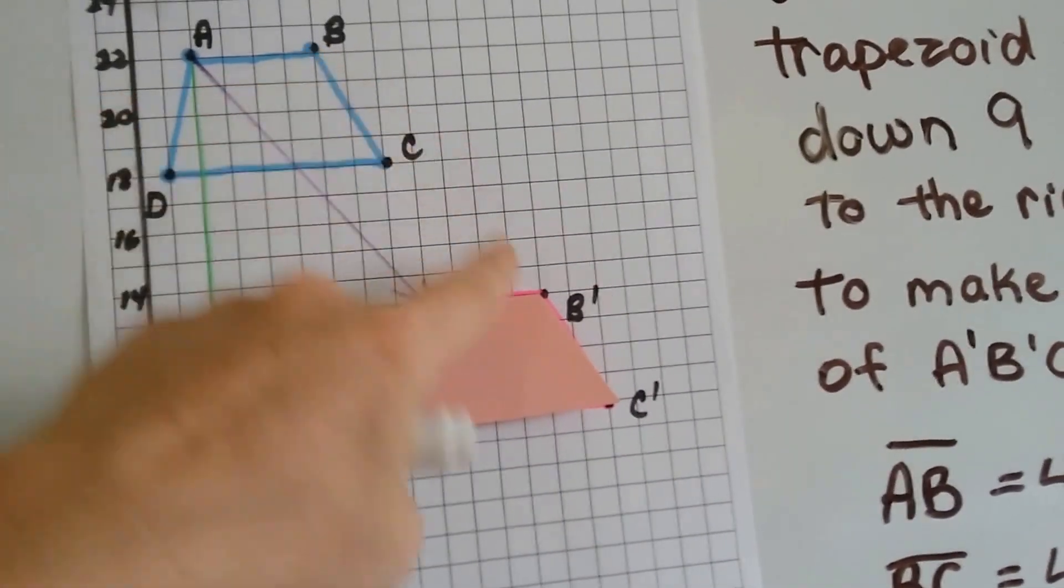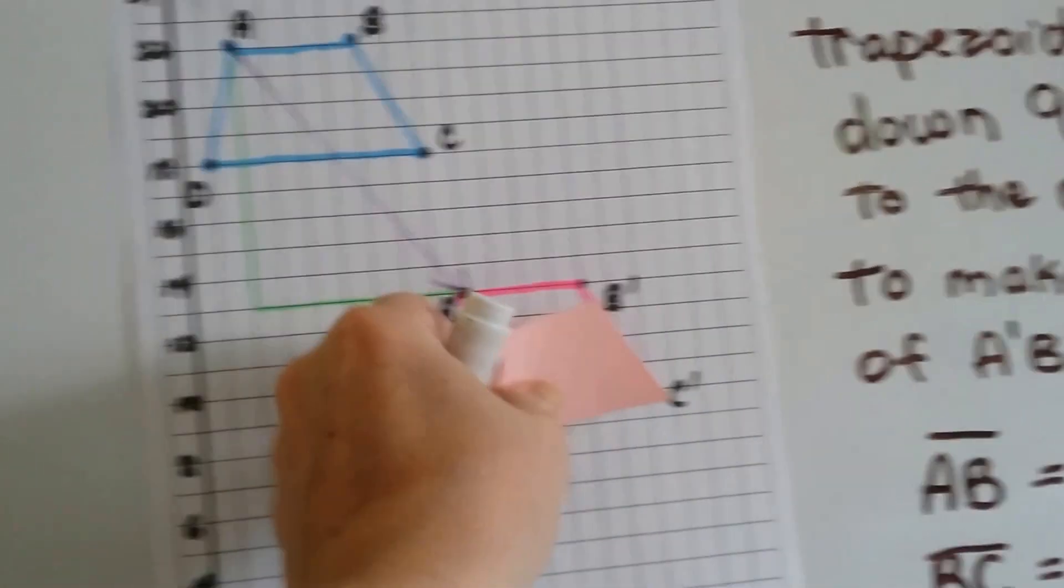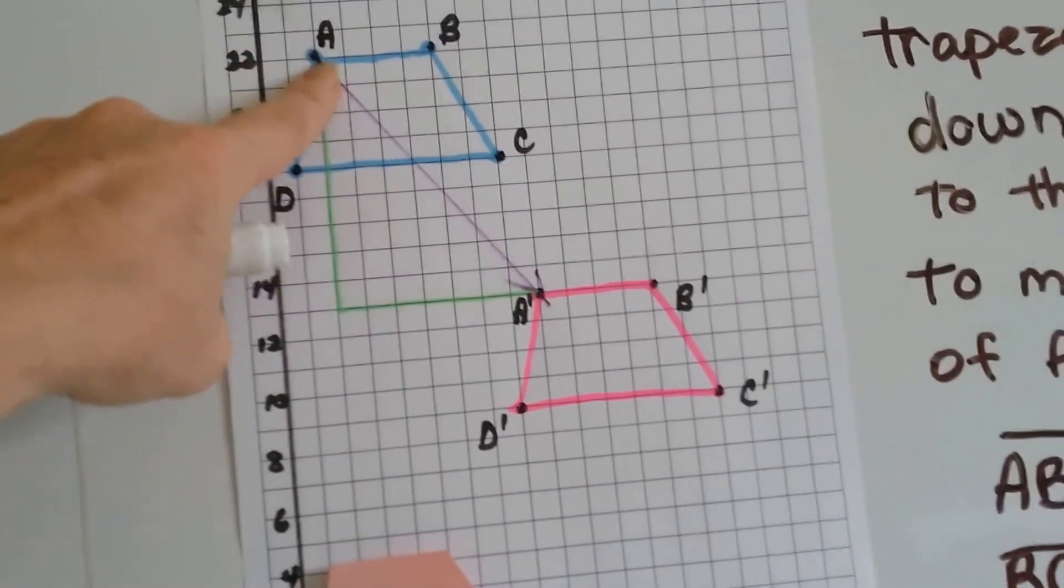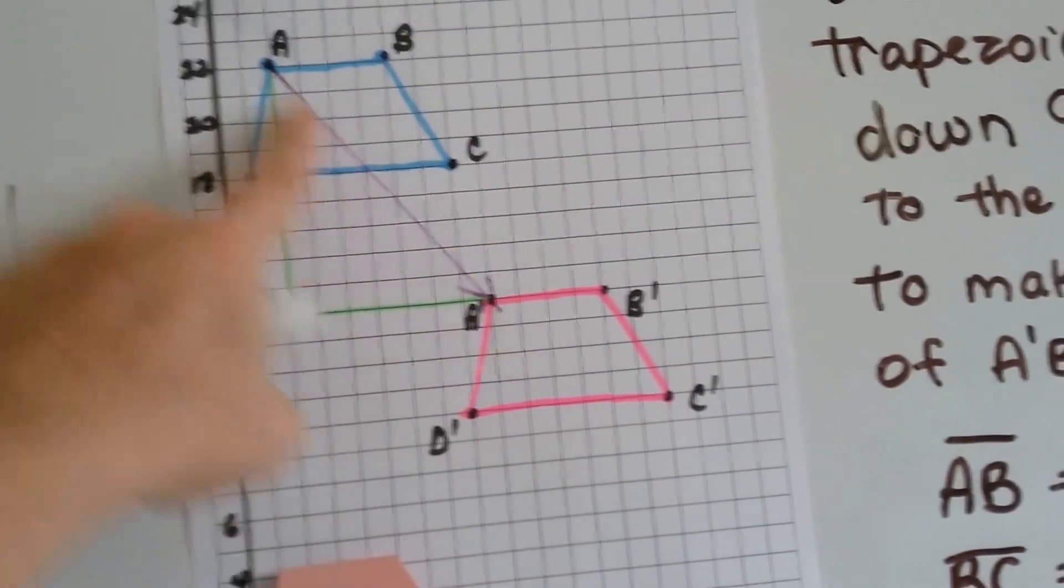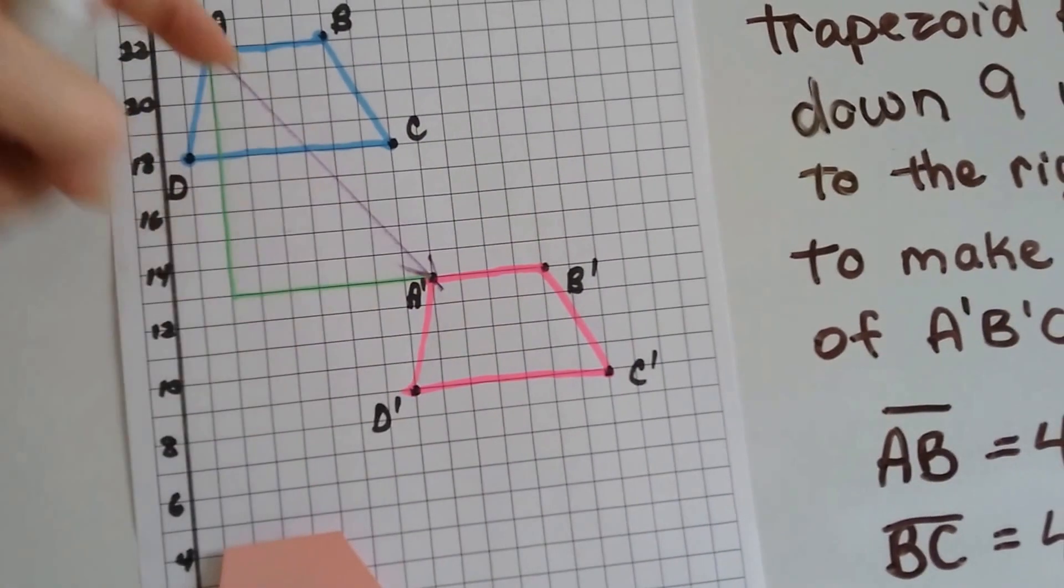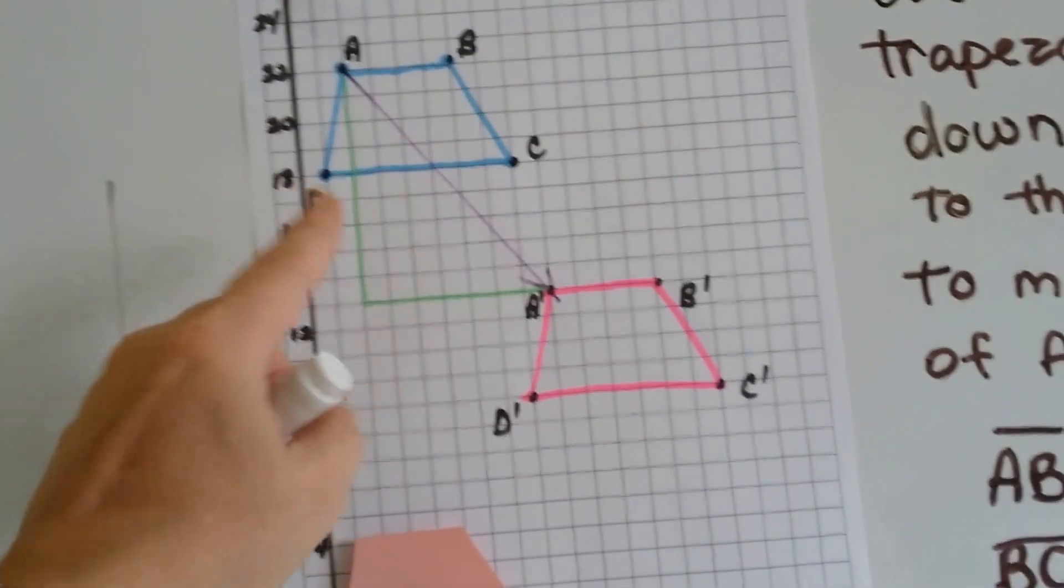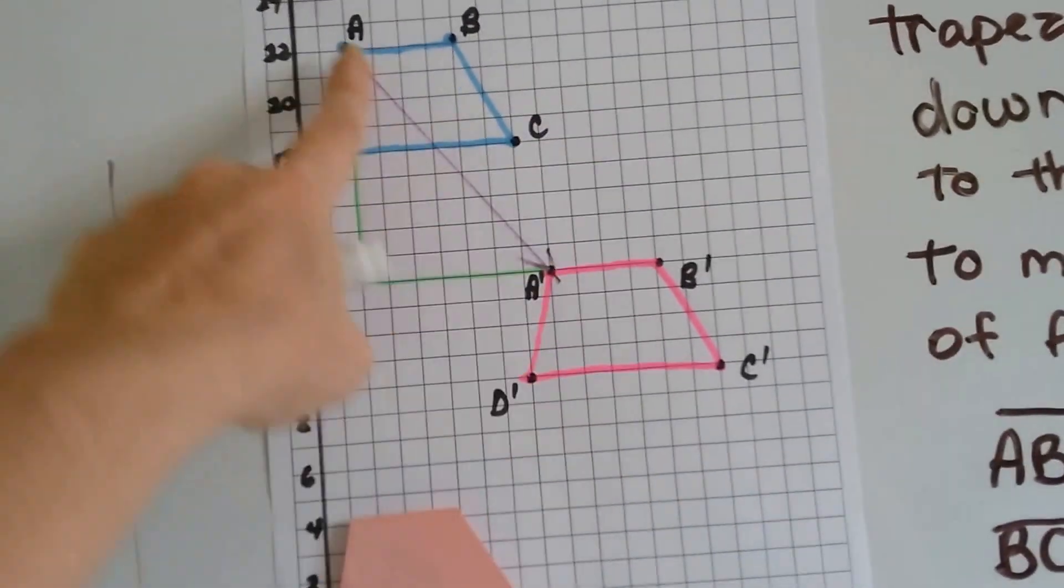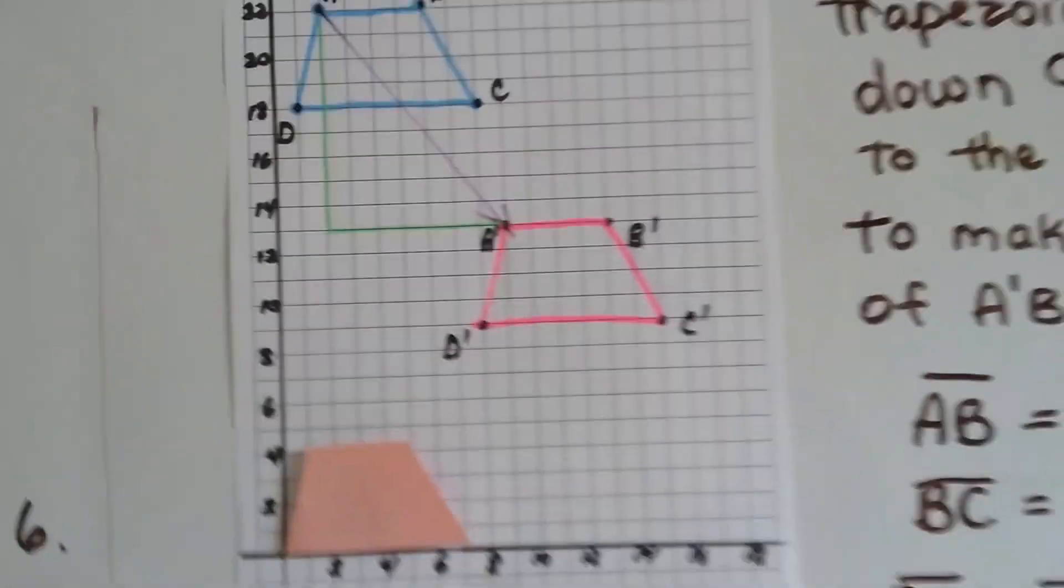We can draw a line from B to B prime, and we can see that we've got a negative slope because it's heading down to the right. This is our rise and our run. We can also see there's a right triangle, and that's the hypotenuse.